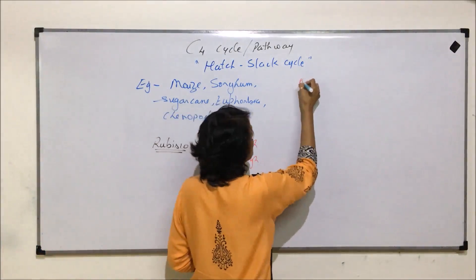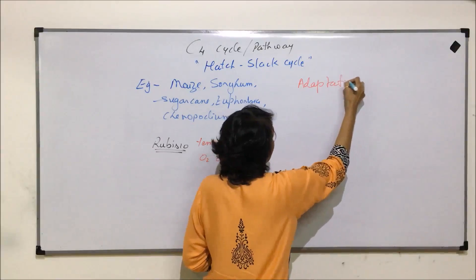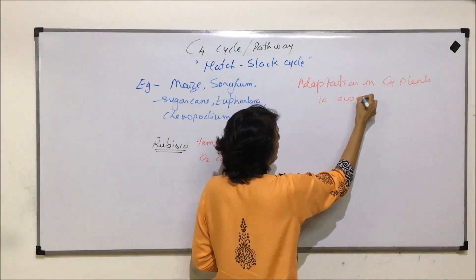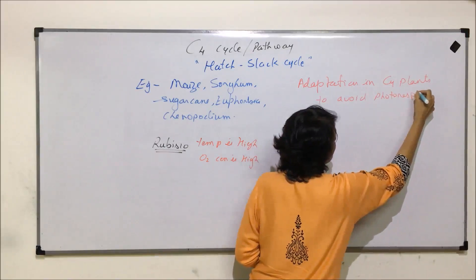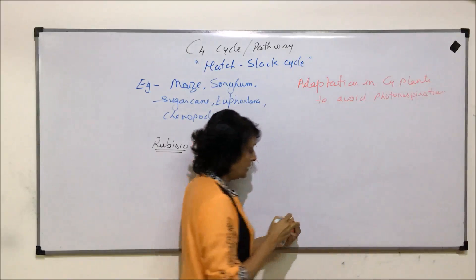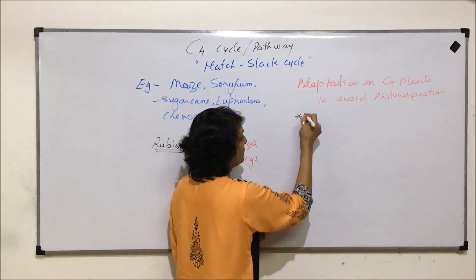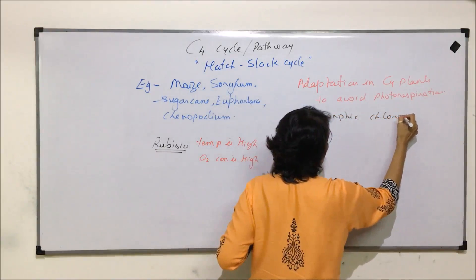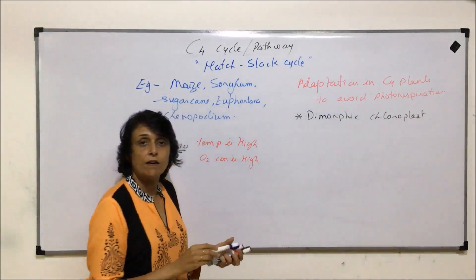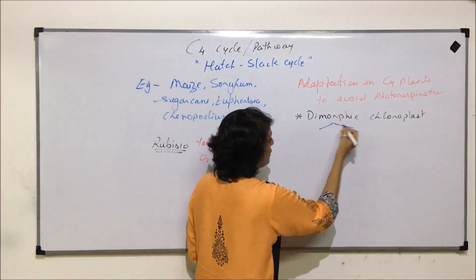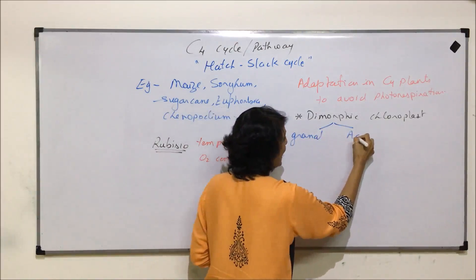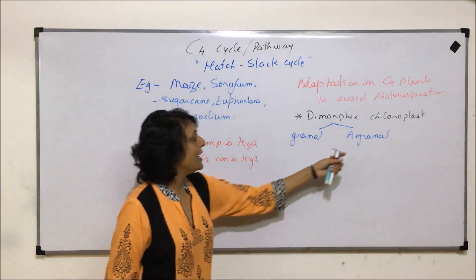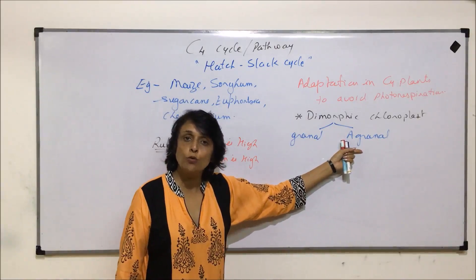Let us talk about the adaptations seen in C4 plants to avoid photorespiration. The first adaptation is that they show dimorphic chloroplasts — granal and agranal. Granal chloroplasts have grana, while agranal chloroplasts do not have grana; they would have only stroma laminae.